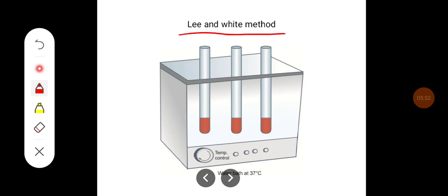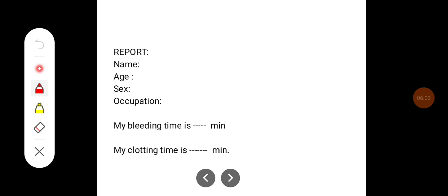So every 30 seconds the tube is tilted and the clotting time is determined. Then it has to be reported.